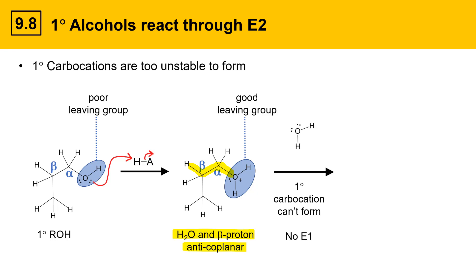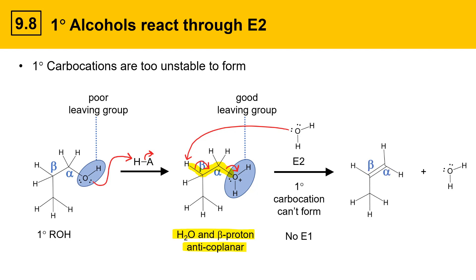Water functions as the base, and the E2 reaction proceeds when the base abstracts a proton off the beta position. The electrons flow to form a new bond between the beta and alpha positions, and the leaving group leaves — giving a carbon-carbon double bond between the alpha and beta positions, and water as a co-product.